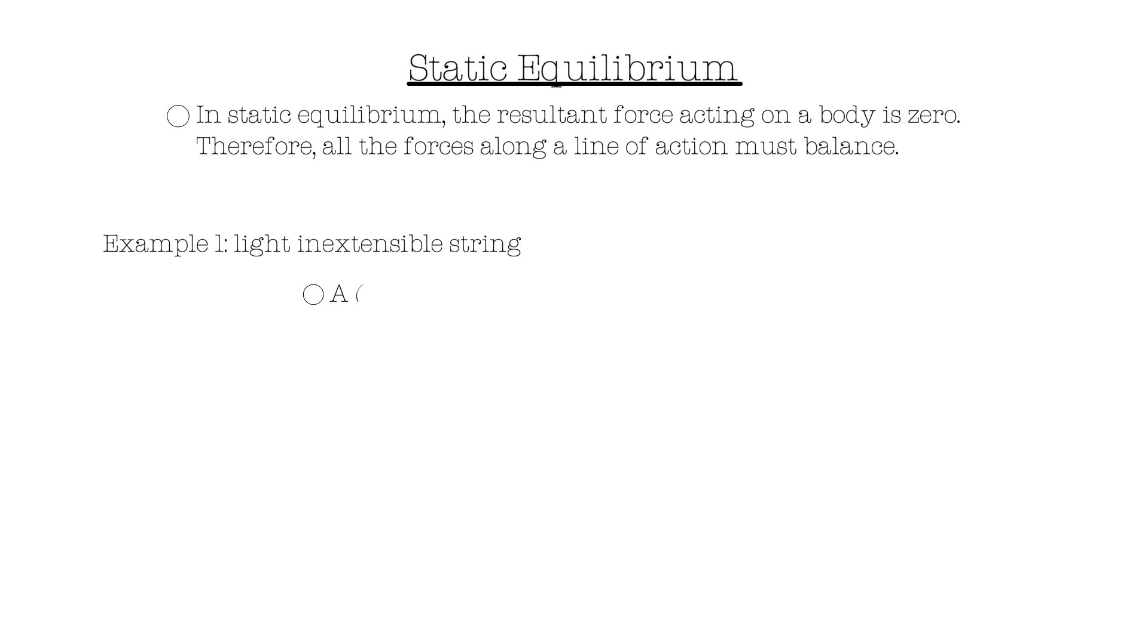So, we have a fixed point, like a ceiling. A ball is attached to the ceiling using a light inextensible string. In this case, there are two forces acting on the ball: the weight of the ball and the tension on the string.